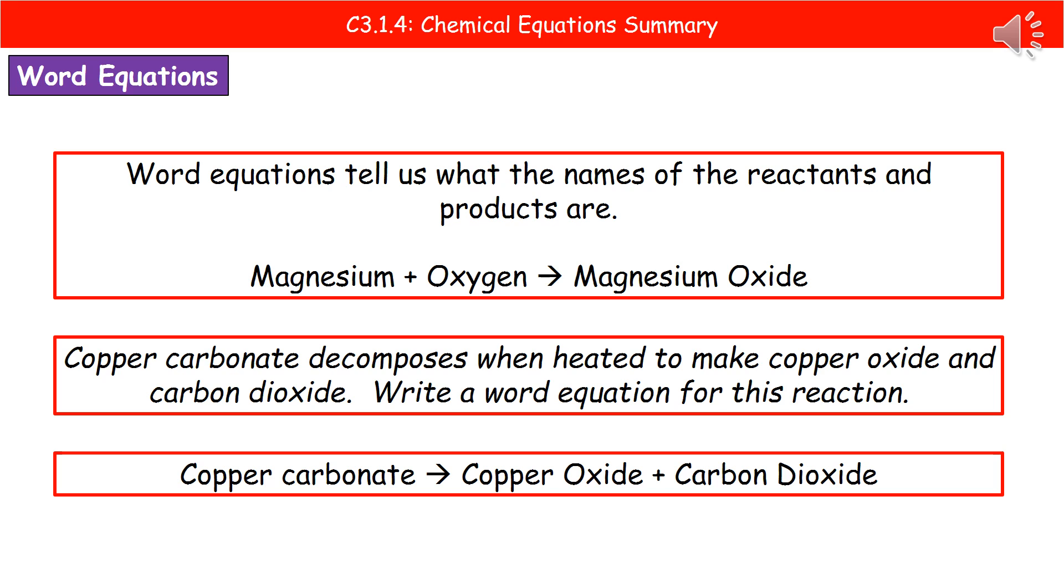All you need to do to get the mark there is copy the name of the reactants. In this case, it's only the one, the copper carbonate. You place your arrow to represent the chemical change, and then you write the name of the products on the right hand side. In this case, copper oxide and carbon dioxide.